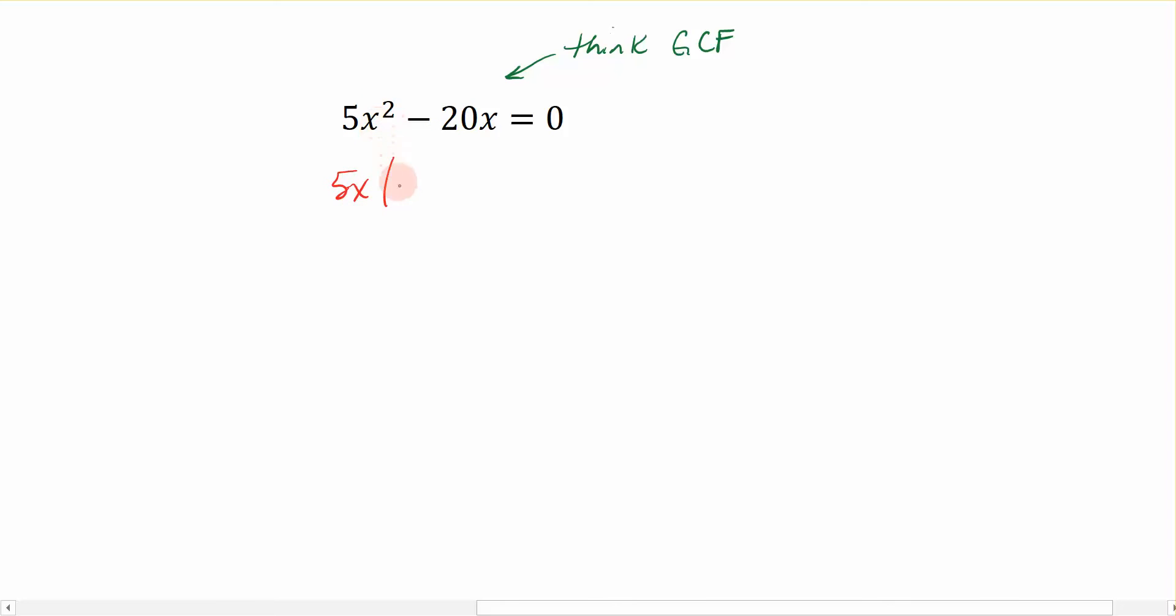I'm left with x minus negative 20x divided by 5x is a 4, and that's equal to zero. So this is a different form of factoring. This is factoring using GCF. But what did I get? I have two factors equal to zero. And I can have multiple factors equal to zero.